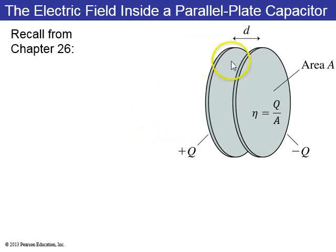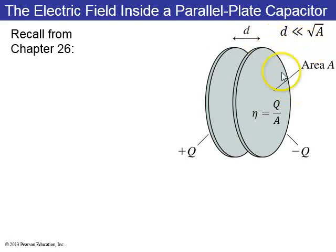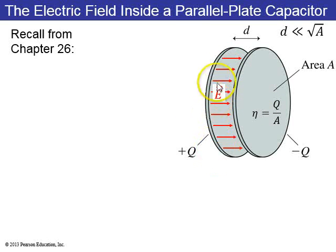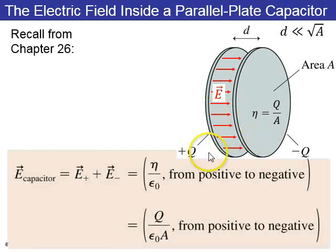Let's look back at chapter 26, which introduced the parallel plate capacitor. That is two metal plates separated by some distance d, where d is much less than the size of the plates. If they have area A, each plate carries a charge: positive on one plate, equal negative on the other. Q is the amount of that charge, and eta is Q divided by A — the charge density. The electric field is eta divided by epsilon naught, or Q divided by epsilon naught times A, and it always points from the positive to the negative plate.